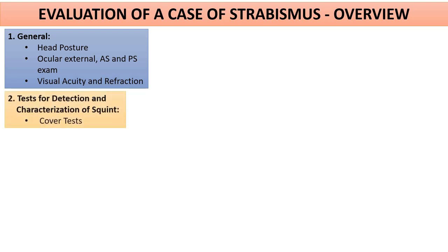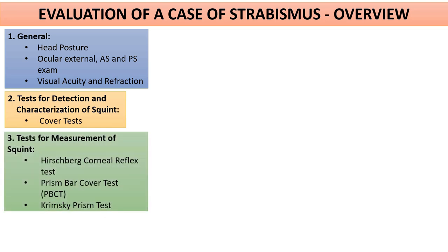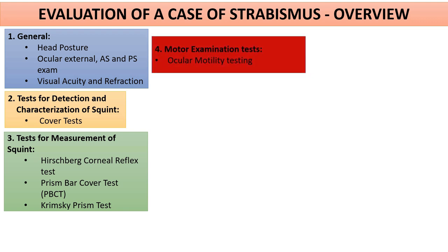I will start from the second category which is the cover test. The cover test is the first test that has to be done in squint evaluation because it is a test for detection and characterization of the squint. Once we have done this, we go to the test for measurement of squint: the Hirschberg corneal reflex test, the prism bar cover test, and the Krimsky prism test. After measurement comes ocular motility and motor examination. With these three categories — cover test, measurement, and ocular motility — any case of squint can be diagnosed.